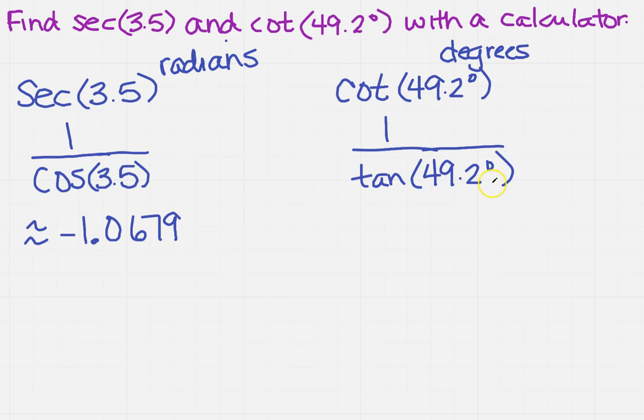So you'd put in 49.2, push tangent, push 1 over x, and you should get approximately 0.8632.